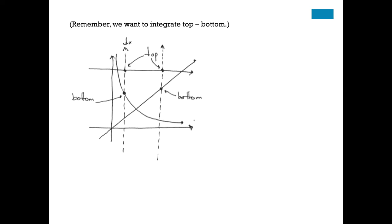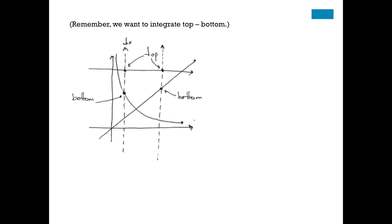What does that mean for us? Well, it means that, first of all, we need to identify the point where the change happens, where the bottom boundary changes from y equals 1 over x to y equals x. And it means that we're going to need two integrals, and that that intersection point 1 is going to be where those change.